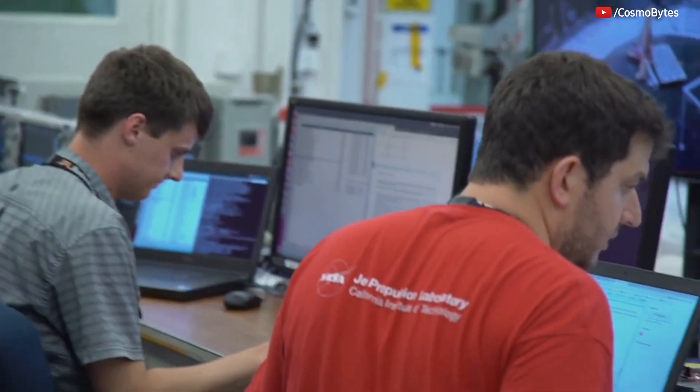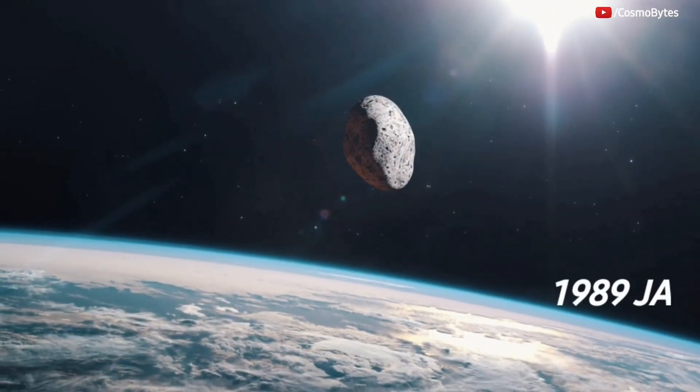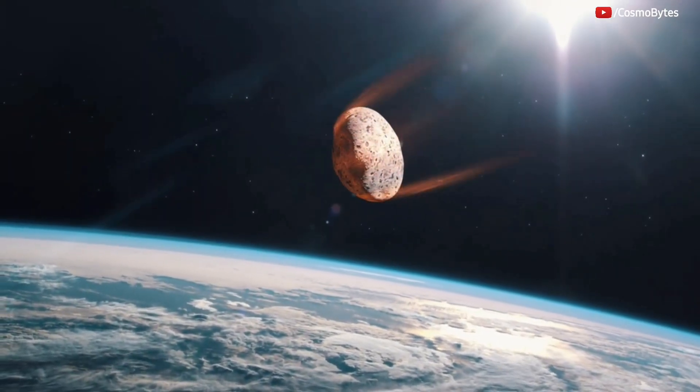NASA JPL has classified 1989 JA as a potentially hazardous asteroid due to its predicted close passes with Earth.